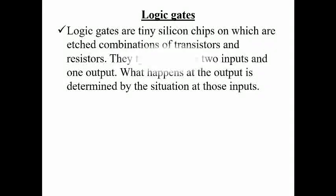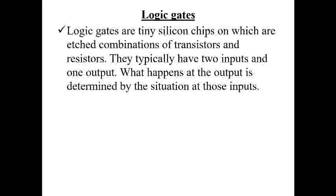Logic gates are tiny silicon chips, most of them produced from silicon, on which each is combined of transistors and resistors. They typically have two inputs and one output. However, there is one logic gate that has only one input — that is the NOT gate.